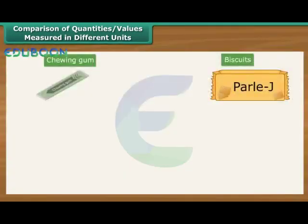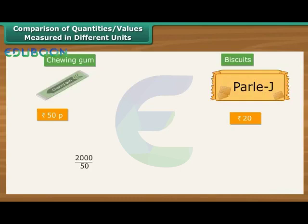Hari has bought a chewing gum for 50 paise. His friend Shiv has bought a packet of biscuits for Rs. 20. Who spent more money and by how many times? Before comparing, we express Rs. 20 as 2000 paise. Now we can work out the ratio. 2000 by 50 is 40 by 1, which is equal to 40 is to 1. We can therefore say that Shiv has spent 40 times more money than Hari.